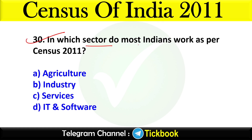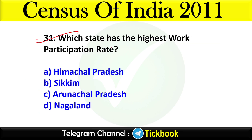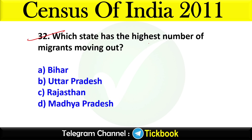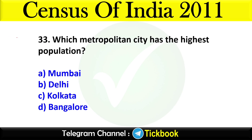Question thirty: In which sector do most Indians work as per Census 2011? Option number A is the right answer: Agriculture — that's the primary sector. Question thirty-one: Which state has the highest work participation rate? Option number B: Sikkim. Question thirty-two: Which state has the highest number of migrants moving out? Option number B: Uttar Pradesh.